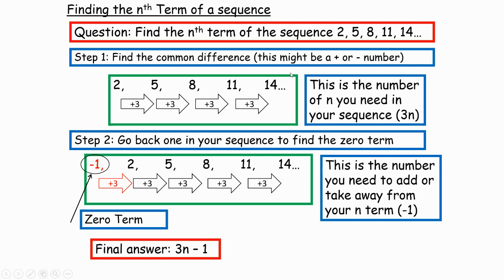So let's go through that one more time. You've got your sequence. You find out what it's going up or down in — it's going up in threes, so that means 3n, which is part of our answer. Write down 3n. Then go back one in your sequence. Going back one, I get to negative 1, so my final answer is 3n minus 1.